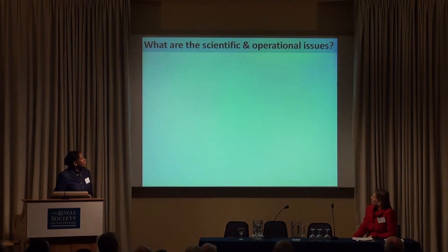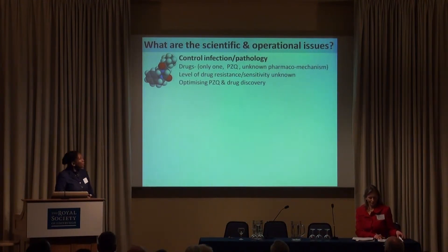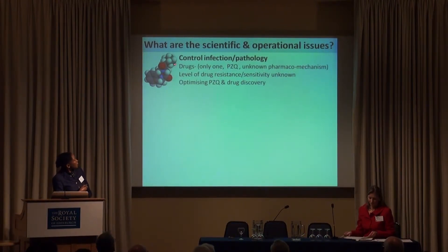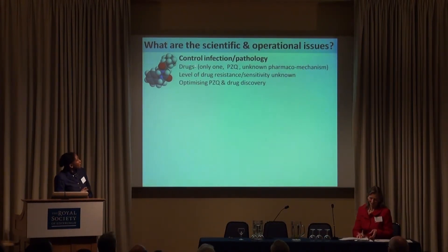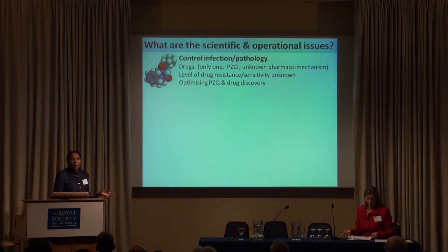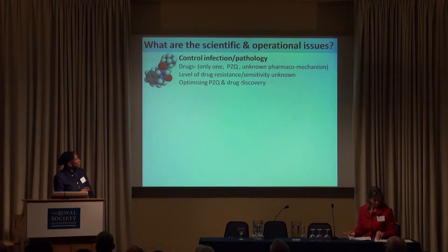What are the operational aspects we've been looking at? Firstly, we're interested in the control of infection and pathology. We have one drug — Praziquantel — which has been in use since the 1970s, and we have no idea what the pharmacokinetics are. We need to understand that and look at levels of drug resistance and sensitivity. My research group is involved in optimizing Praziquantel use and also in drug discovery studies.